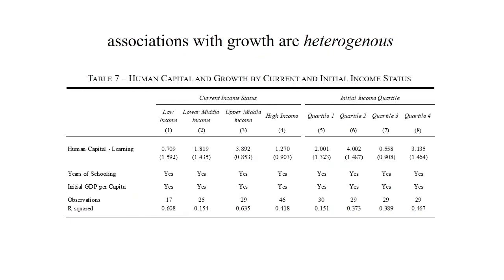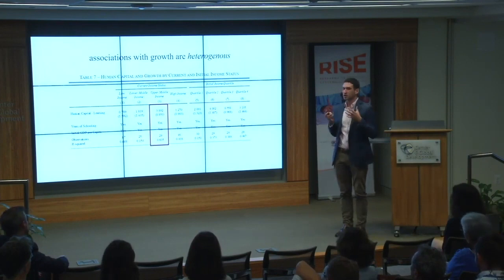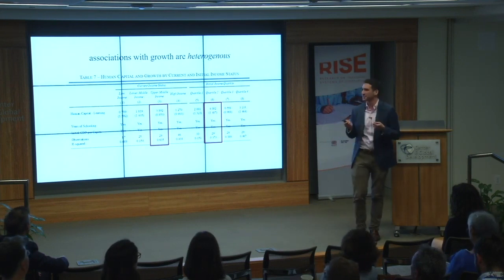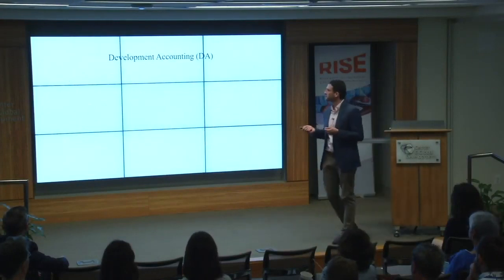These associations are heterogeneous — one of the nice features of the larger database is you can actually examine heterogeneity. We find that the association with growth is highest for currently upper-middle-income countries, and looking at initial income quartile at the beginning of the period, it's the second quartile. This is interesting because it might suggest a human capital 'sweet spot' — on the low end, labor markets may not be rewarding human capital in the same way yet, but in this middle space there's potentially a sweet spot to explore further.